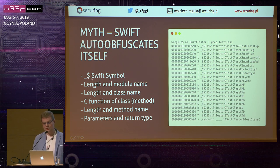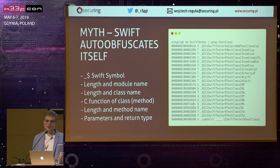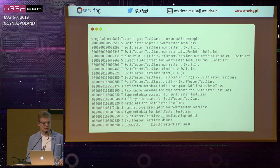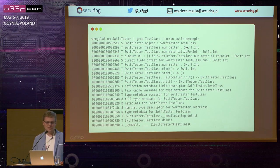As you can see, the underscore-dollar indicates a Swift symbol, then we have the length of the module name and return values. But Apple even provides a tool that will automatically demangle the names for you. When you pass those grep results to `xcrun swift-demangle`, you can see how those weird strings are translated to human-readable form.